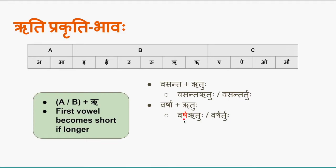'Varsha' becomes 'varsha + ruthu', so the long akara becomes short. This is one key difference: in prakriti bhava, if the first vowel is long it becomes short, and both letters remain side by side without sandhi being applied. The next example is 'vadhu + runam'.